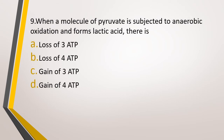Question number 9. When a molecule of pyruvate is subjected to anaerobic oxidation and forms lactic acid, there is? Option A: Loss of 3 ATP. Option B: Loss of 4 ATP. Option C: Gain of 3 ATP. Option D: Gain of 4 ATP. The correct answer is Option A — loss of 3 ATP. When pyruvate is converted to lactic acid, one molecule of NADH + H⁺ gets converted to NAD⁺. One molecule of NADH₂ is equivalent to 3 ATP, so since one molecule is used up in this process, there is a loss of 3 ATP.